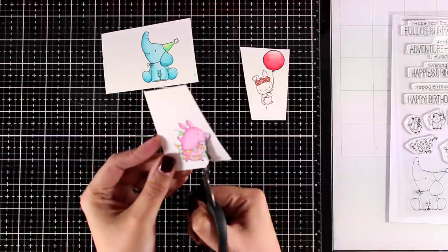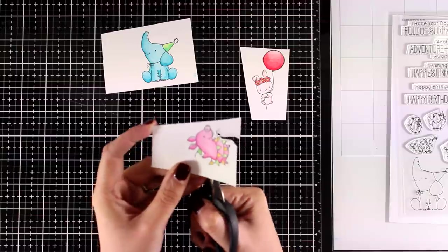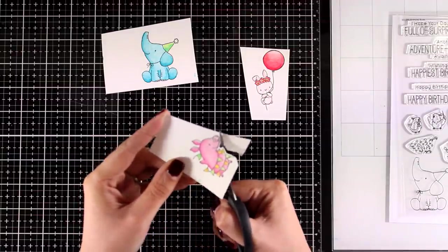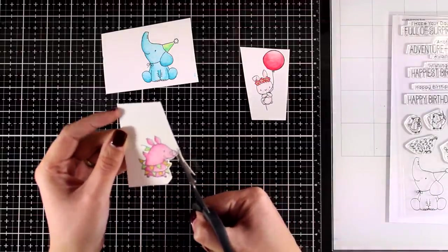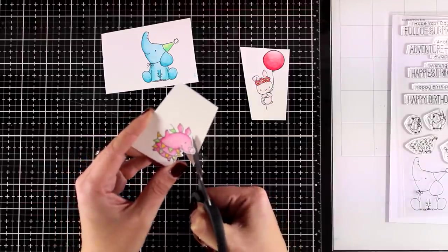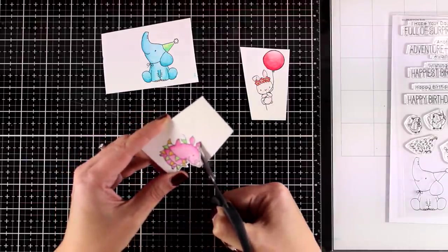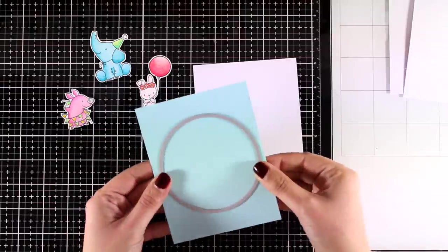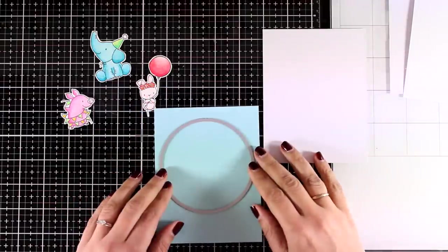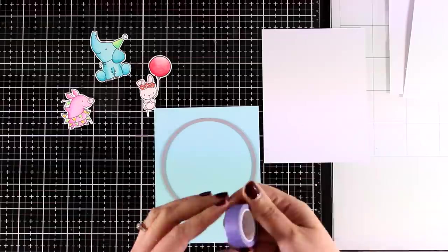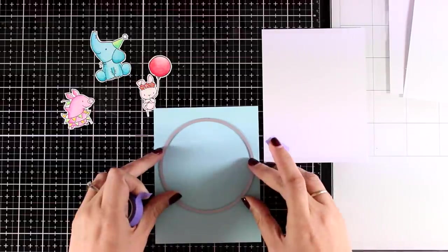Now there are matching dies for this stamp set, which I don't have, so I'm just doing my fuzzy cutting. I'm going to cut out all the images. As I cut out my images, I'm also leaving a white border just like if I used the dies.